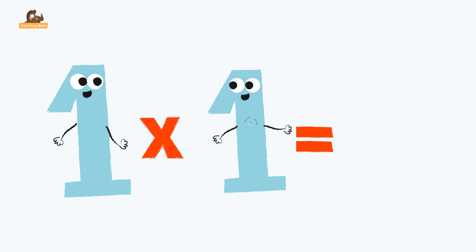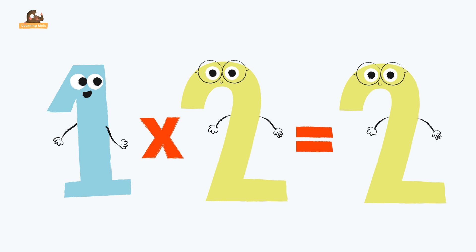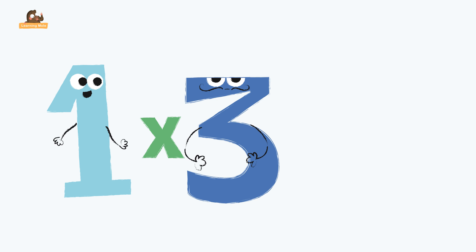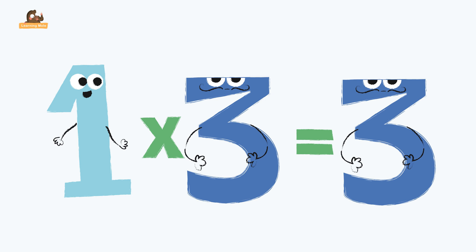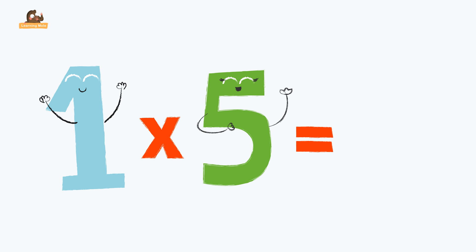One times one equals one. One times two equals two. One times three equals three. One times four equals four. One times five equals five.